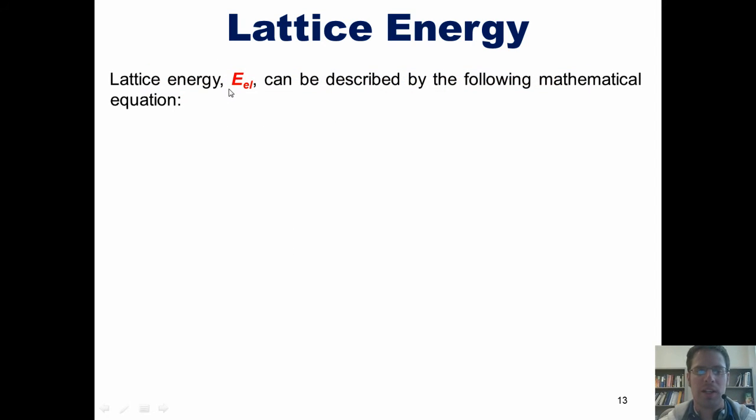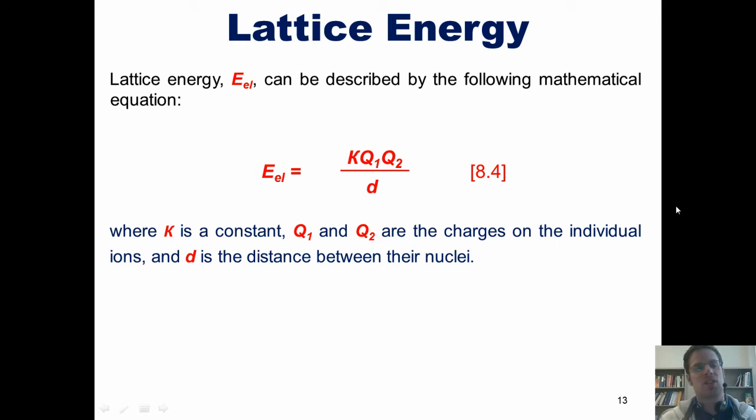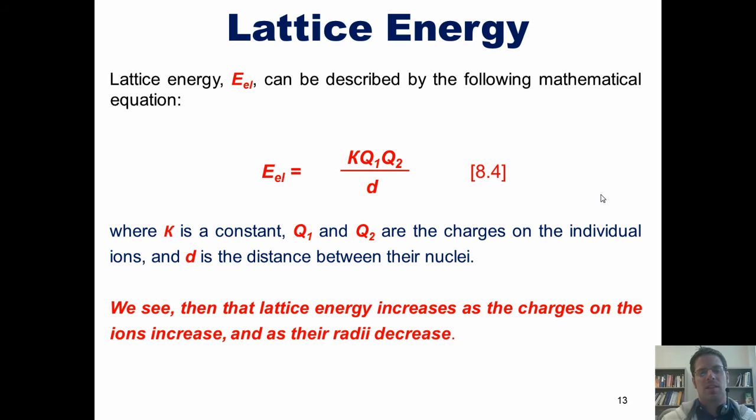Lattice energy, which is also called in our book E sub EL, can be described using the following mathematical equation. E sub EL equals kappa times Q1, Q2 divided by D, where kappa is some constant, and Q1 and Q2 are the individual charges of the individual ions, the cation and the anion, and D is the distance between their nuclei. Now, if you analyze this formula mathematically, you'll see a couple of things. First of all, if I increase Q1 and Q2, it's going to increase the lattice energy. If I increase the bond distance, it will decrease the lattice energy. If I decrease the bond distance, it will increase the lattice energy. And if I decrease the charges, Q1 and Q2, it will decrease the lattice energy. Thus, we can see that the lattice energy increases as the charges on the ions increase, and as their radii, or bonding distance, decreases. Now, that should make sense logically if you think about it.